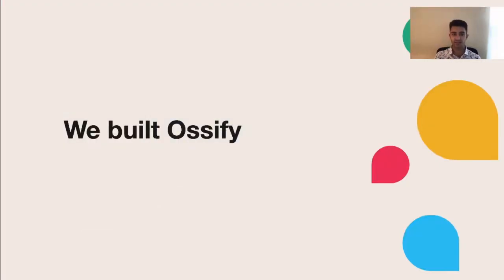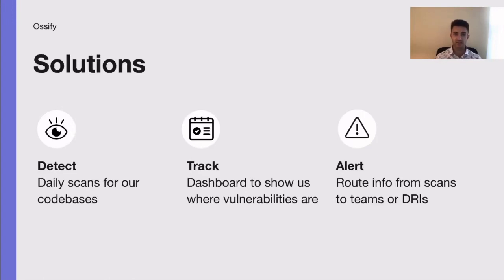So we built Ossify. Our solutions to the three points mentioned earlier were: first, in detection, we run daily scans of our codebases to figure out what packages we're requiring, and we upload those packages to the Sonatype Open Source Vulnerability Index to see if there are any new vulnerabilities reported for our packages. Second, we built a dashboard to track the status of repositories as well as tracking remediation efforts for individual findings. And finally, we built robust Slack alerting, which will be covered more later.